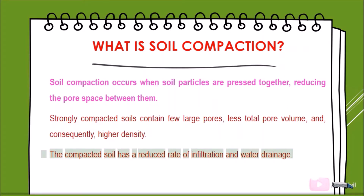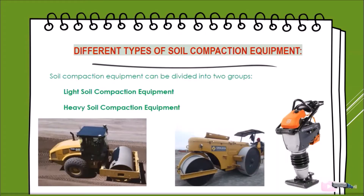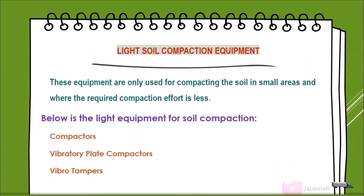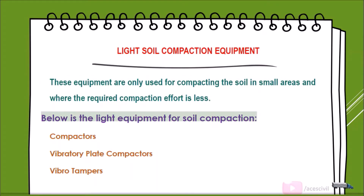Soil compaction equipment can be divided into two groups: light soil compaction equipment and heavy soil compaction equipment. Light soil compaction equipment is only used for compacting soil in small areas and where the required compaction effort is less. Below is the light equipment for soil compaction: compactors, vibratory plate compactors, and vibro tampers.